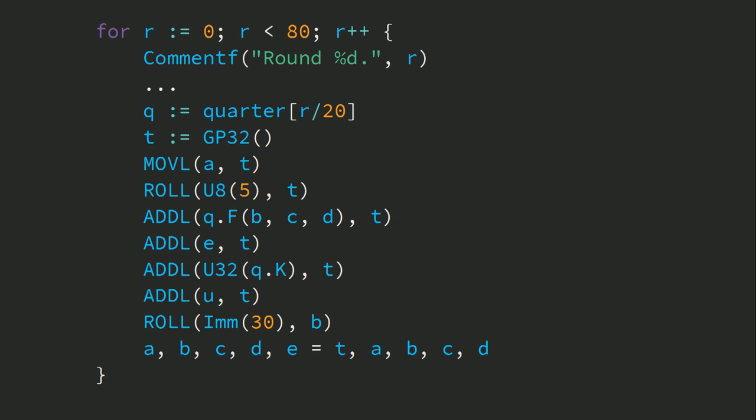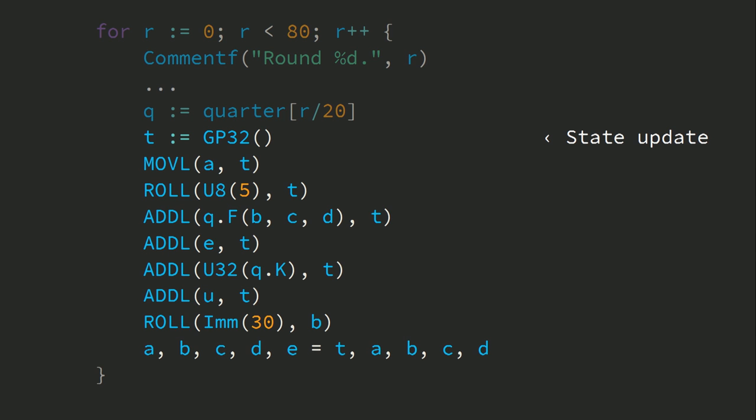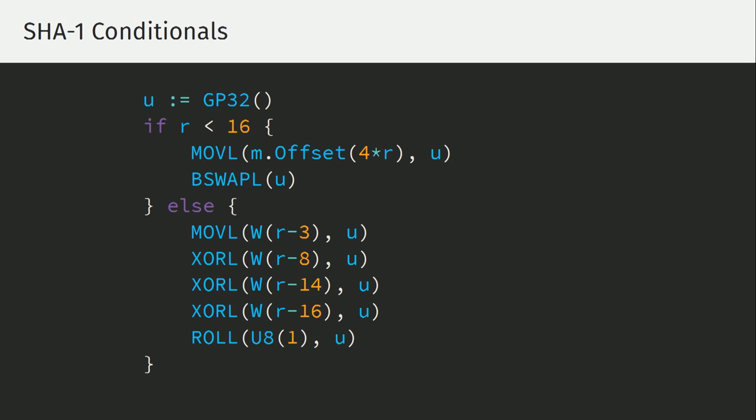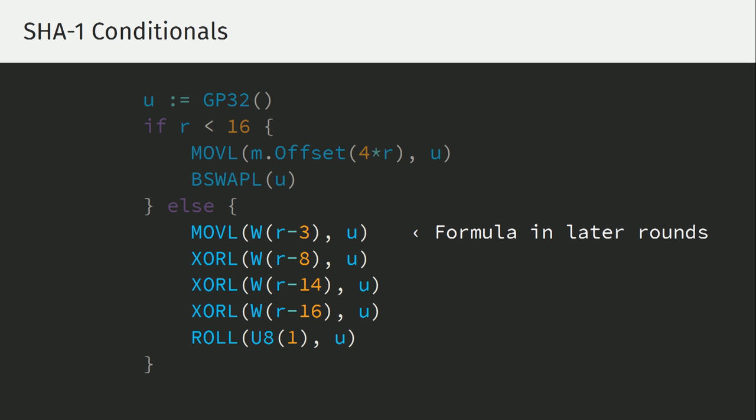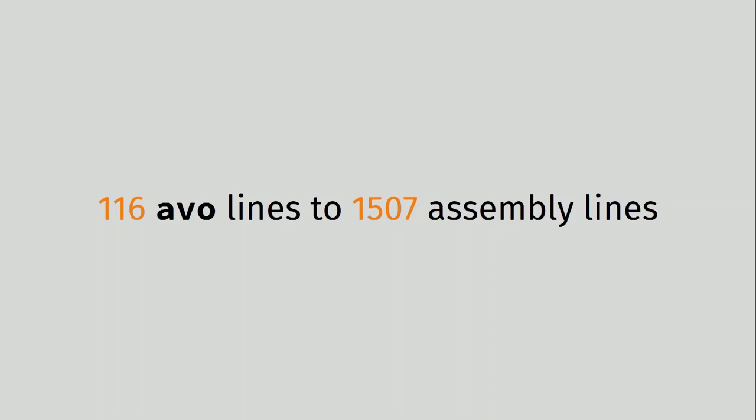When it comes to executing the round functions, we can just use a Go loop — looping once for all 80 rounds. These instructions perform a state update on the registers we're maintaining. What I like about this is that when you look at the full AVO code generator, you're looking at something with a very similar structure to the specification of SHA-1. We can also use conditionals inside the round update: for the first 16 rounds we read the message from memory, and for later rounds we perform a sequence of instructions to do the message update. This reduces the implementation from what would be 1,500 lines of unrolled assembly to just over 100 lines in AVO — lines where you can see the structure.